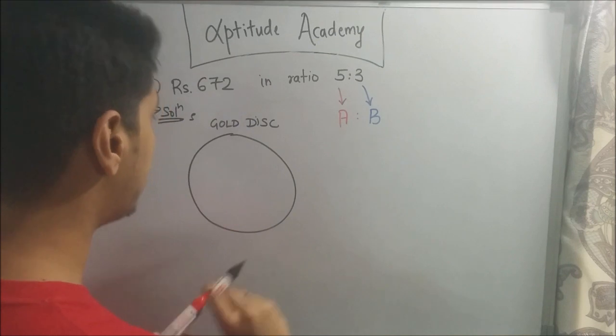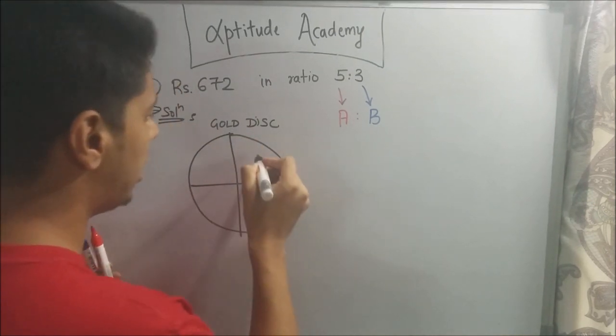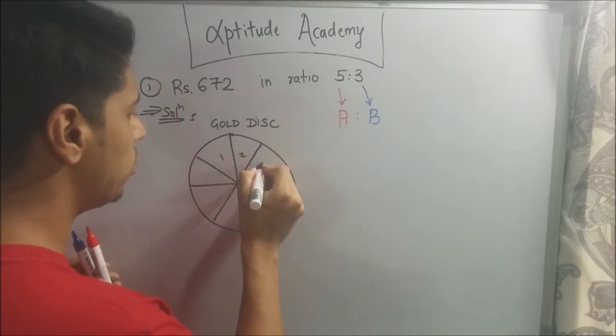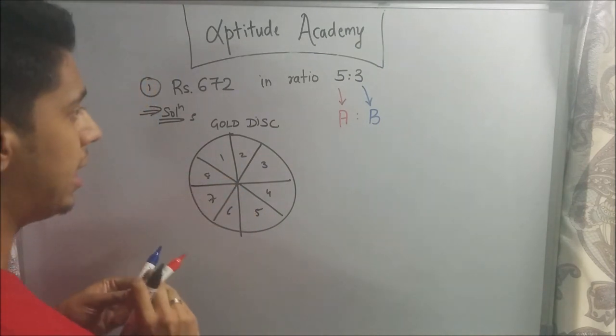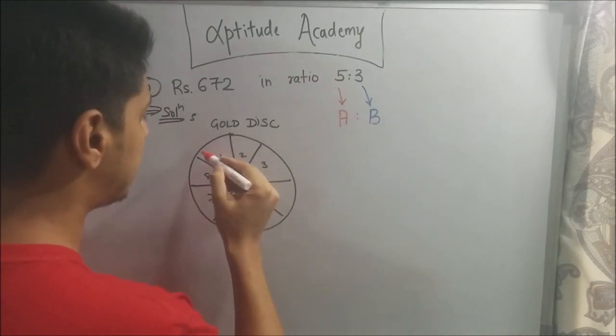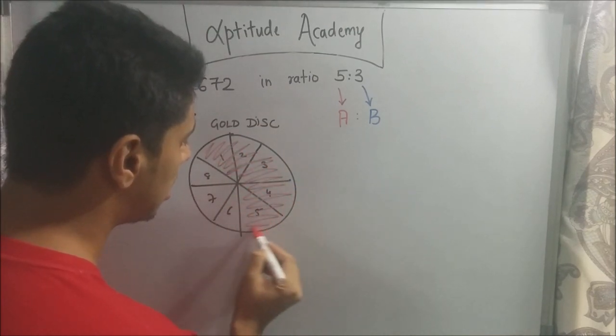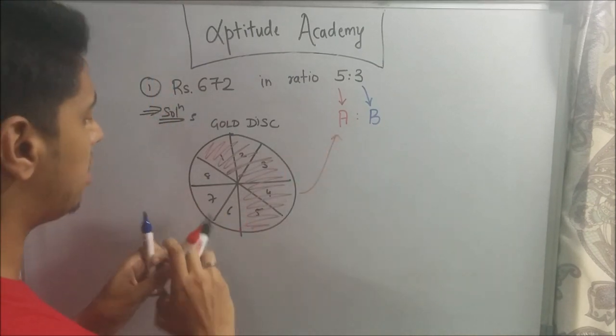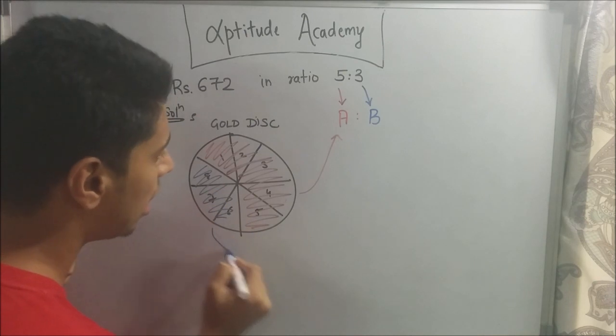That's how they can get 5 is to 3. So, what I will do is I will divide my disk into 8 parts. So, 1, 2, 3, 4, 5, 6, 7, 8. Now, A should get 5 parts. So, these 5 parts I am going to give it to A. And the remaining blue parts, these 3 parts, I am going to give it to B.